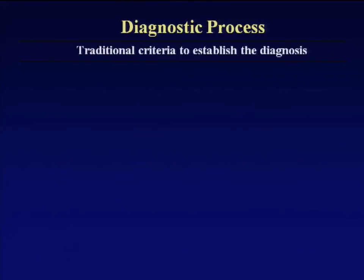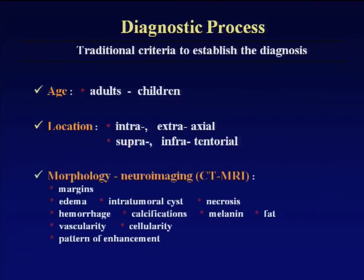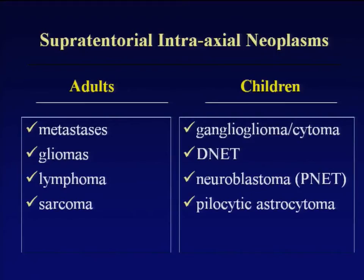We will briefly discuss new developments — perfusion, spectroscopy — during the workshop, but my goal is to emphasize those traditional criteria, which are very important: the age of the patient, since we have different histologic types of tumors in children versus adults; the location of the tumor, in intra- or extra-axial space, supra- or infratentorial compartments; and the traditional criteria — margins, edema, cyst, necrosis, hemorrhage, calcification, melanin, fat, vascularity, cellularity, and the pattern of enhancement.